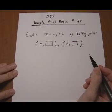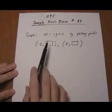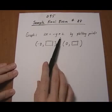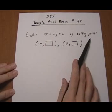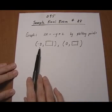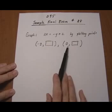Sample final exam number 28. Here we're asked to graph the equation 2x equals minus y plus 2 by plotting points, and we're given the x values for the points, minus 2 and 0.